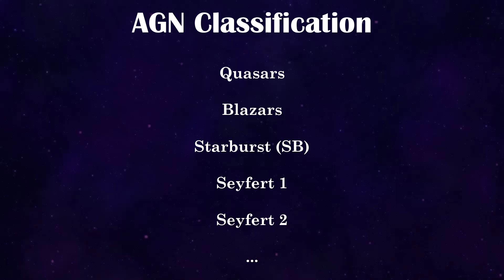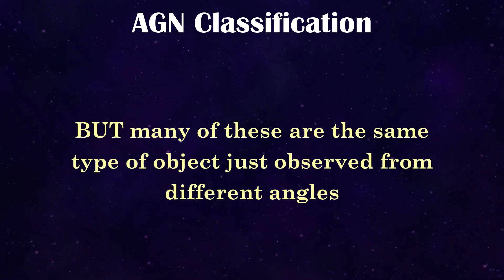I won't explain where each are here, but what's crucial in understanding is that most of these types of AGN are actually the same sort of objects, but observed from different viewing angles.